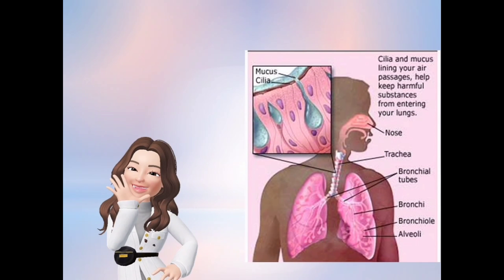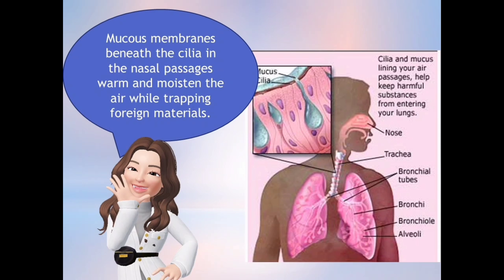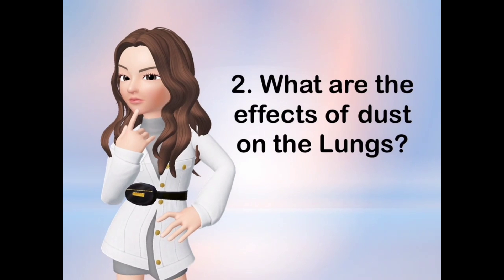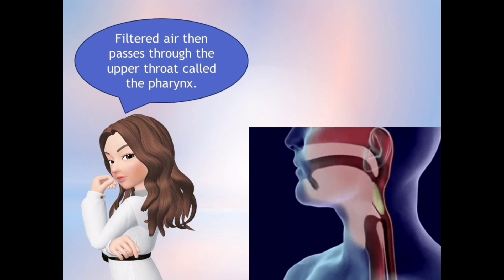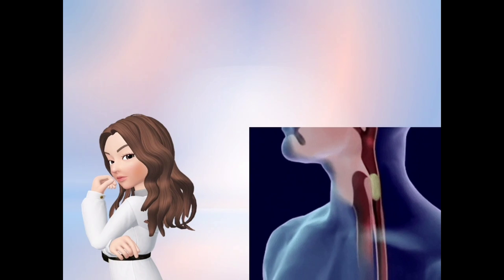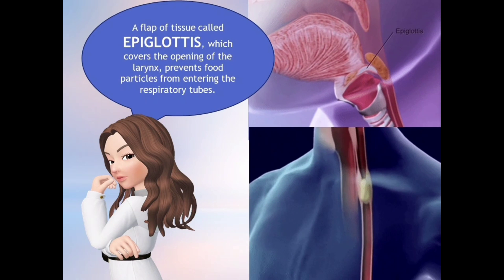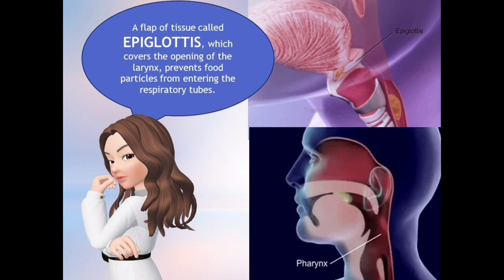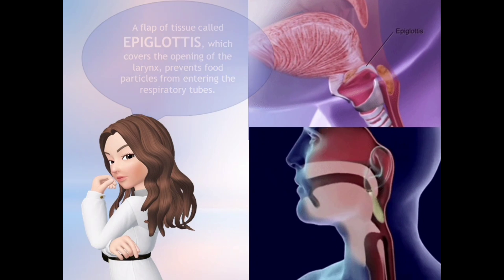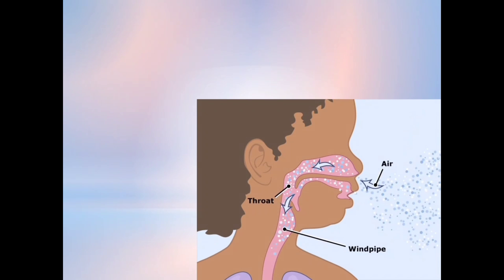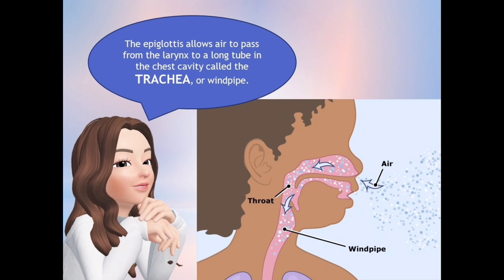The mucous membrane beneath the cilia in the nasal passages warms and moistens the air while trapping foreign materials. What are the effects of dust on the lungs? Filtered air then passes through the upper throat called the pharynx. A flap of tissue called the epiglottis, which covers the opening of the larynx, prevents food particles from entering the respiratory tubes. Then, the epiglottis allows air to pass from the larynx to a long tube in the chest cavity called the trachea or windpipe.